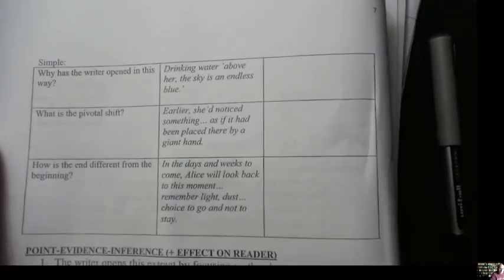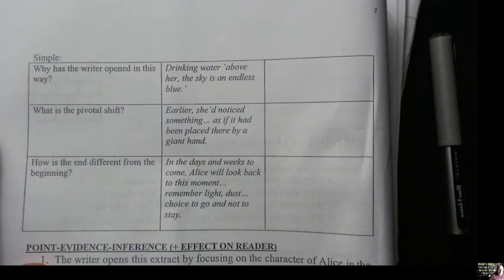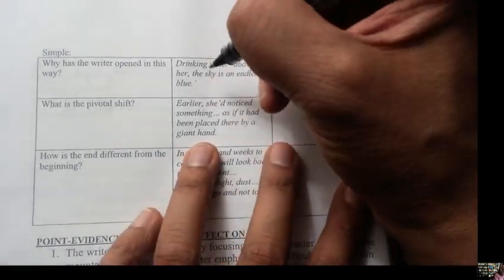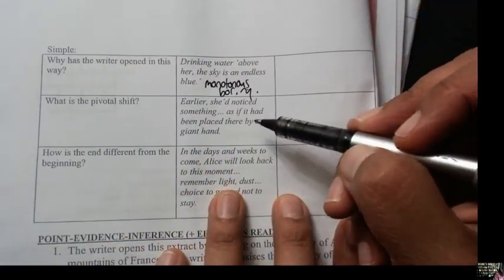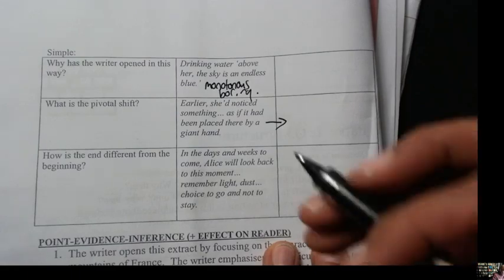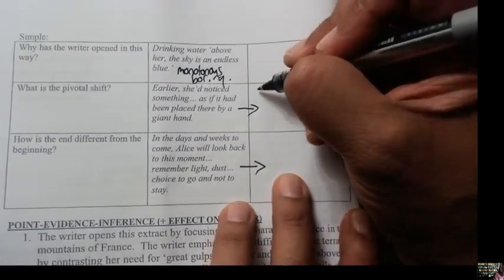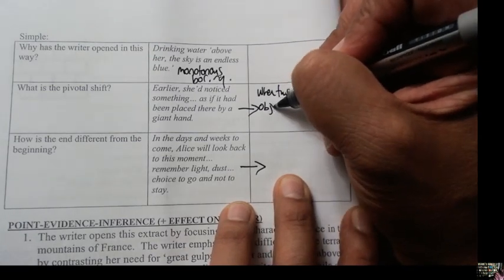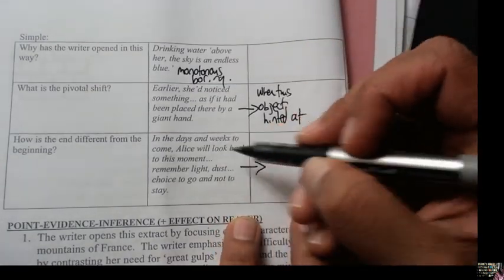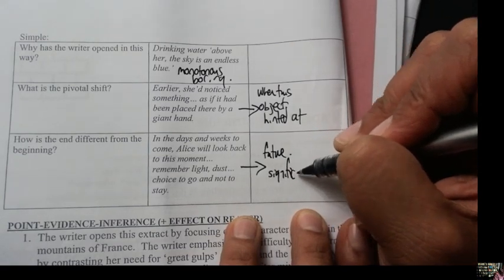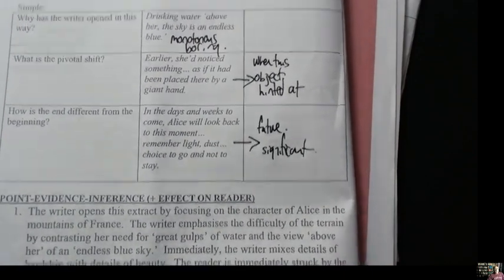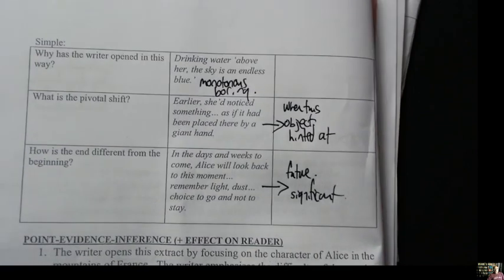Let me go back to my notes from previously - this is what I did years ago. Let's see what I came up with. 'Drink water above her, the sky is an endless blue.' I don't think that's the best quote now - I would also add monotonous, boring. 'Earlier she'd noticed something there' - I would stand by that. The shift is when this object is hinted at, and the flash forward is to suggest this moment is significant and important. I'm obviously very familiar with the source and stealing from question four as well.